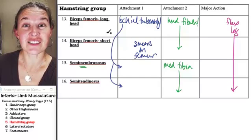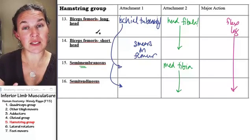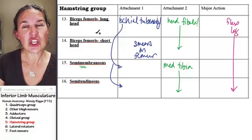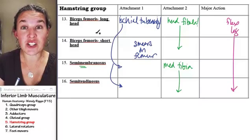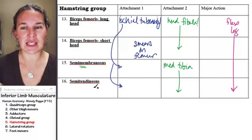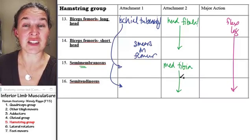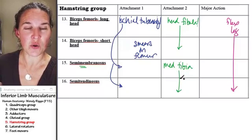If you go medial and palpate the same basic location on the medial side of your thigh, and get your fingers in there, you can actually feel two tendons, and that is semimembranosus and semitendinosus, and they're attaching to the medial side of the tibia, and you can feel both of them.